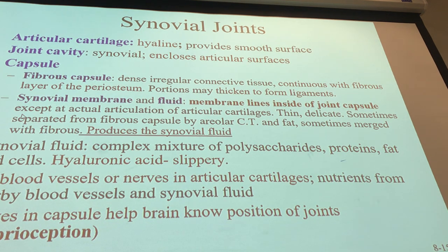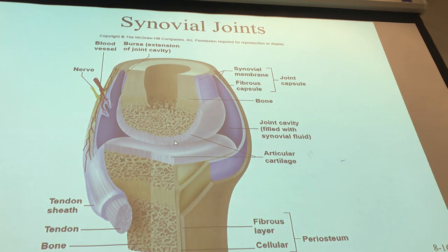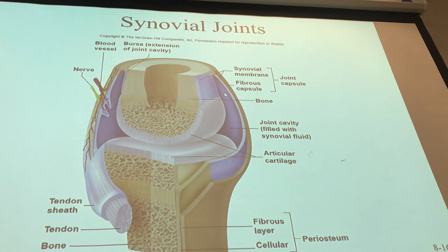To make sure the bones move without friction and pain, we have articular cartilage and synovial fluid. Synovial fluid is like engine oil — it allows for a nice slippery movement between the bones. It's formed by the synovial membrane, which also connects the two bones together, reinforcing the fibrous capsule and making it even stronger. Inside the capsule, the synovial membrane produces a slippery fluid that allows for frictionless movement.